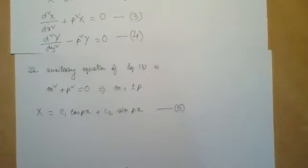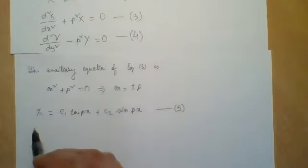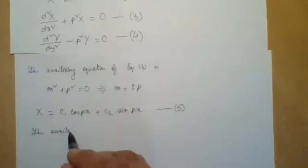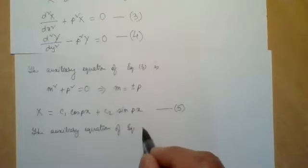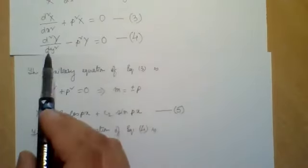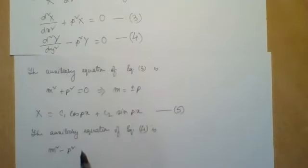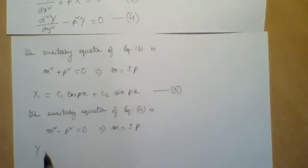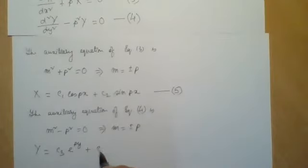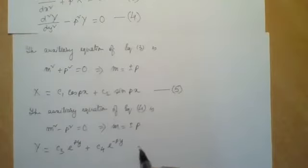Similarly, let us solve equation number 4. The auxiliary equation of equation 4 is m² - p² = 0, which implies m = ±p. That means Y = c₃e^(py) + c₄e^(-py). Let us call this equation number 6.